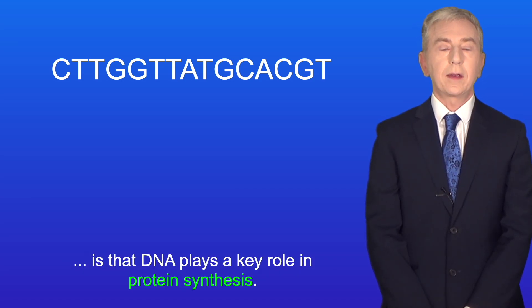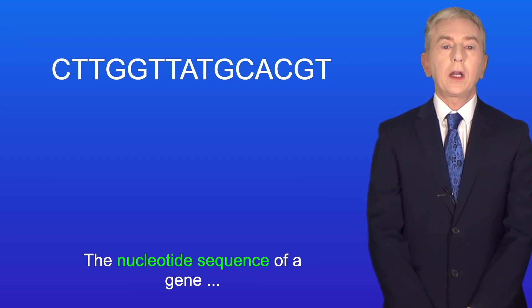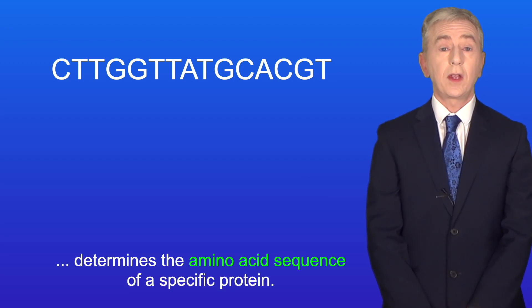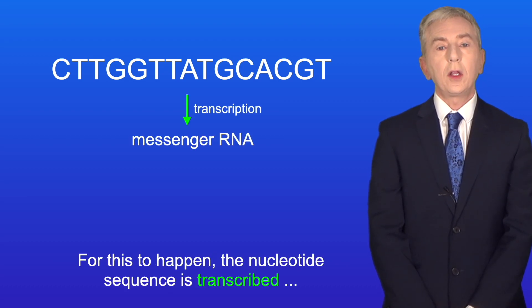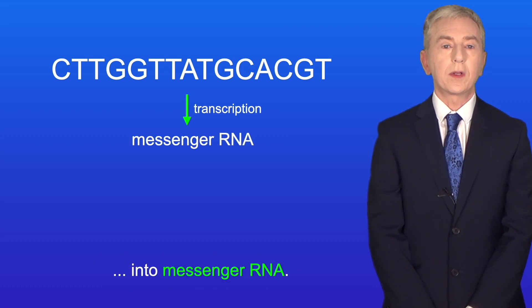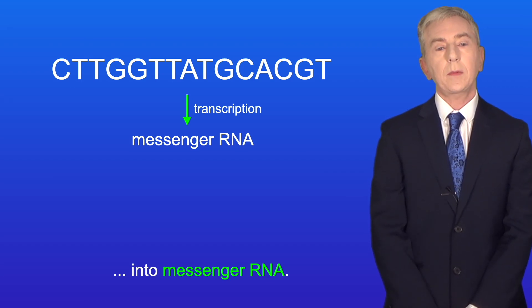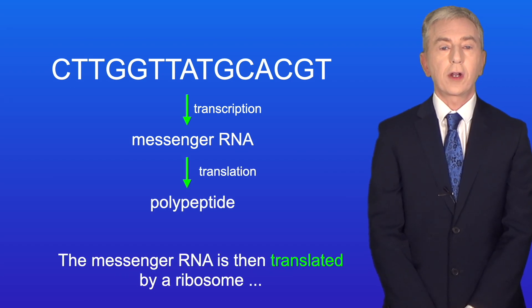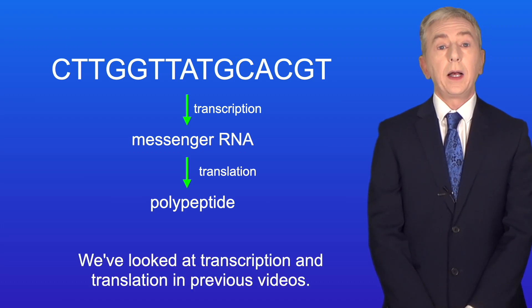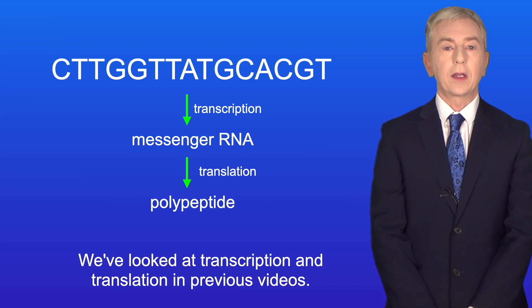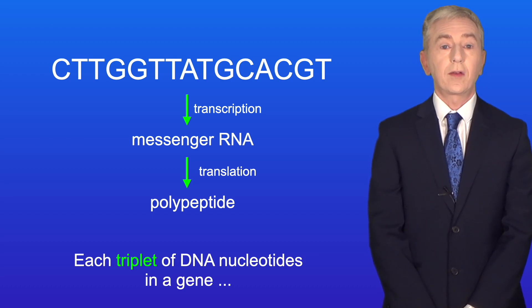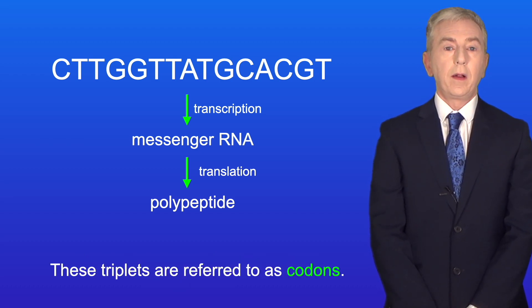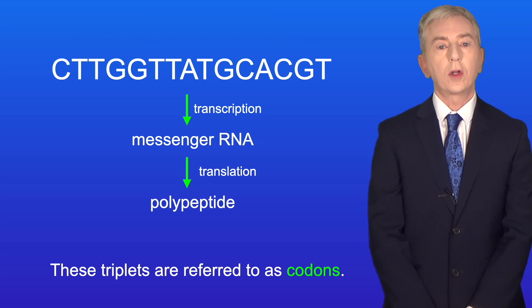A key idea you need to remember is that DNA plays a key role in protein synthesis. The nucleotide sequence of a gene determines the amino acid sequence of a specific protein. For this to happen, the nucleotide sequence is transcribed into messenger RNA. The messenger RNA is then translated by a ribosome into a polypeptide, and we've looked at transcription and translation in previous videos.